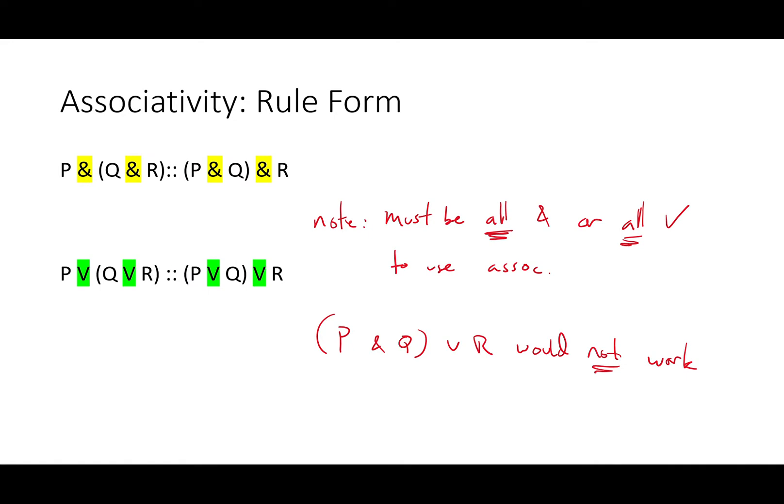Note, however, that it must be all AND or all V to use associativity. A mix like P and Q or R would not work. That's actually one of the most common errors with this rule.